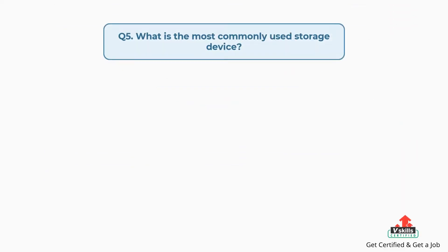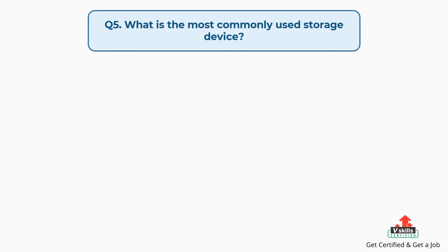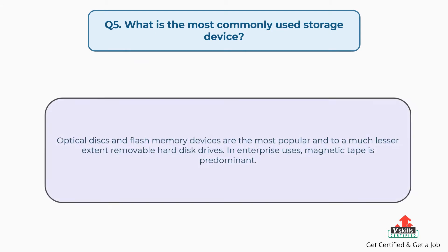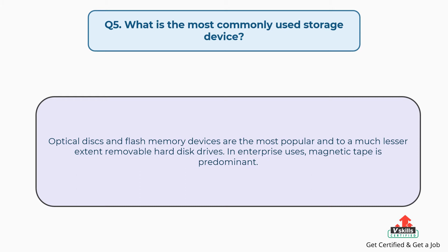Question number five: what is the most commonly used storage device? The answer is, optical disks and flash memory devices are the most popular, and to a much lesser extent removable hard disk drives. In enterprise uses, magnetic tape is predominant.